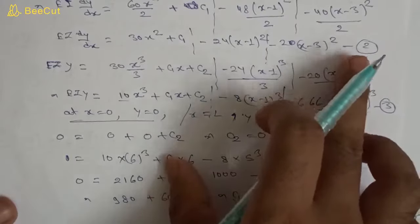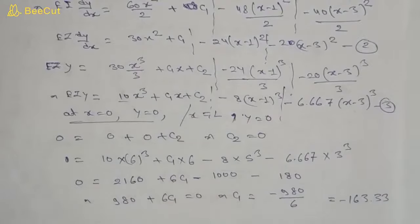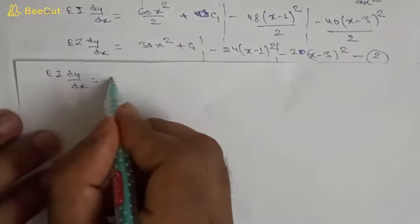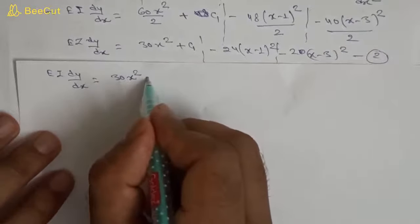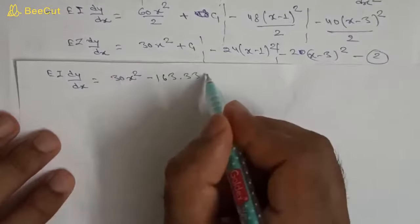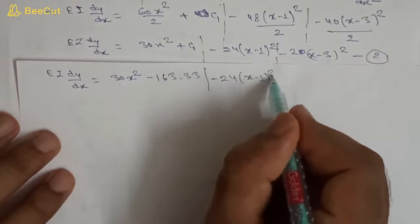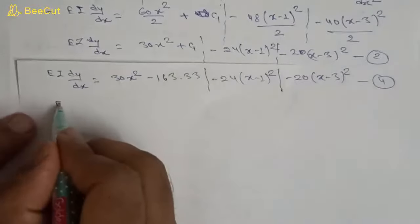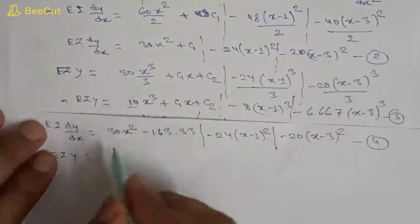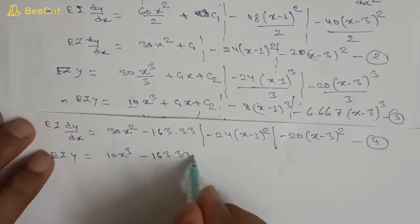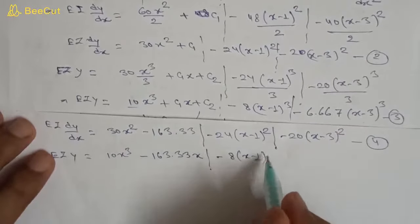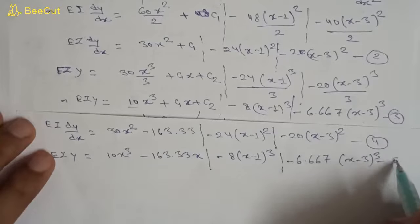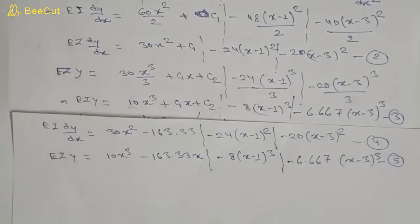Substituting C1 = −163.33 into equation 2: EI·dy/dx = 30x² − 163.33 − 24(x−1)² − 20(x−3)². This is equation 4. And into equation 3: EI·y = 10x³ − 163.33x − 8(x−1)³ − 6.667(x−3)³. This is equation 5.